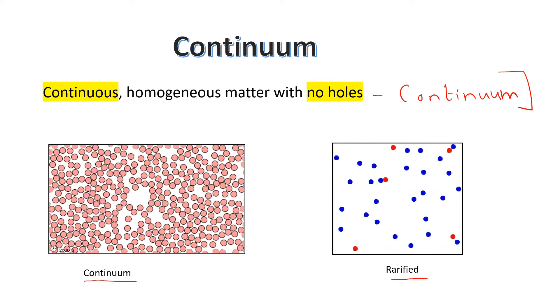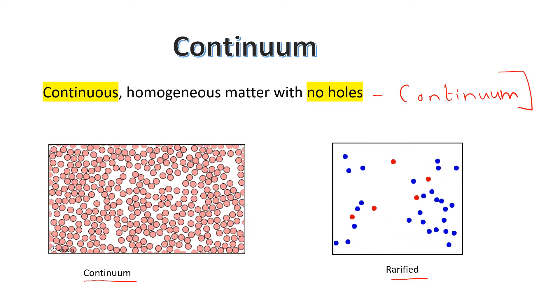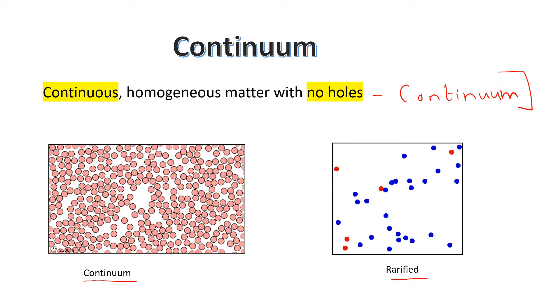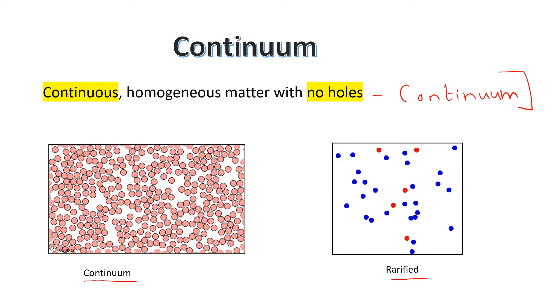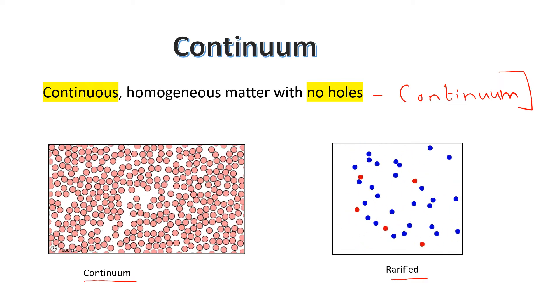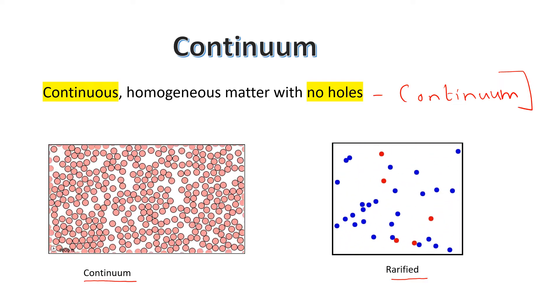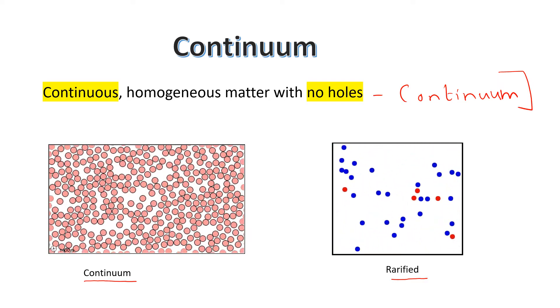You can see the difference that in the continuum idealization the distance between the atoms can be almost neglected and in the rarefied gas the distance between the molecules is significantly high.